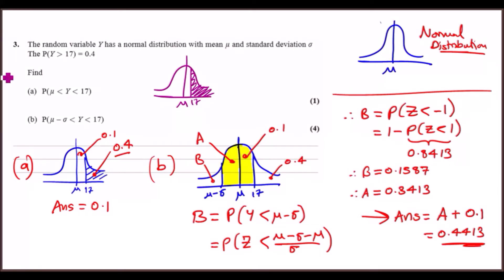Okay, number three. The random variable Y has a normal distribution with mean μ and standard deviation σ. The probability that Y is bigger than 17 is 0.4, so that is the line over here.